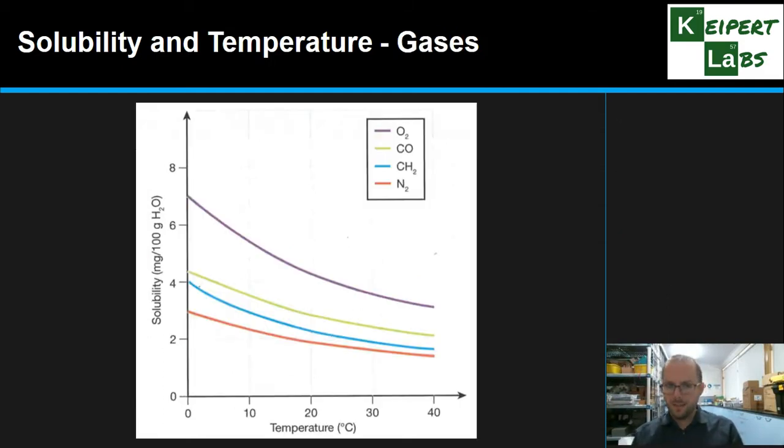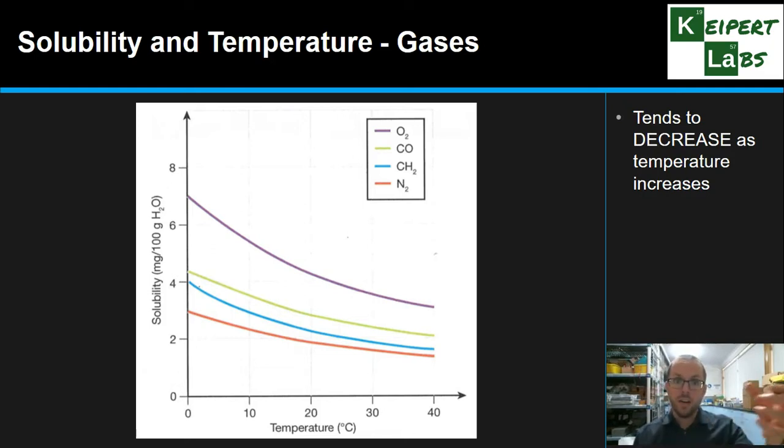Now if we have a look at gases, I know we're talking about ionic compounds at the moment, so this is not directly part of that. But gases show the opposite relationship. That is, the solubility of gases tends to decrease as temperature increases. So if you have a bottle of Coke in the fridge, then more of that gas will be dissolved than if you have that bottle on the bench on a hot day where it's warm.